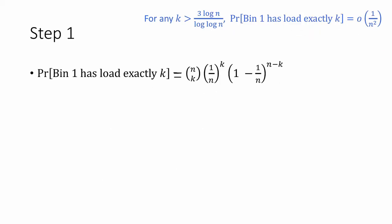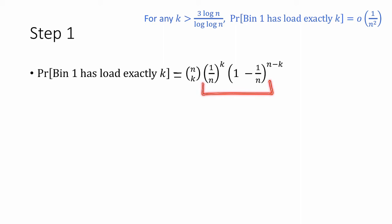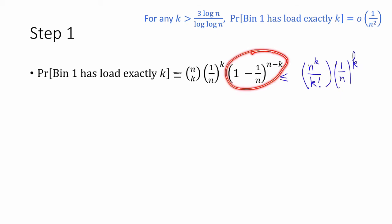Let's start with step 1. We want to show that for any k > 3 log n / log log n, the probability that bin 1 has load exactly k is little-o of 1/n². We compute: P(bin 1 has load exactly k) = C(n, k) · (1/n)^k · (1 − 1/n)^(n−k). We can bound this as ≤ n^k / k! · 1/n^k, using the bound n^k / k! on the binomial coefficient and dropping the last factor (which only makes things larger). The n^k terms cancel, leaving 1 / k!.